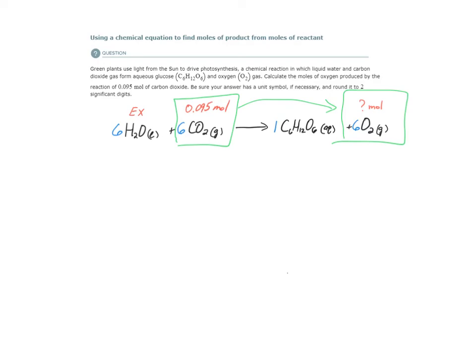Our starting point is our given amount, 0.095 moles of CO2. How do we convert stoichiometry from one substance to another? What's our conversion factor?